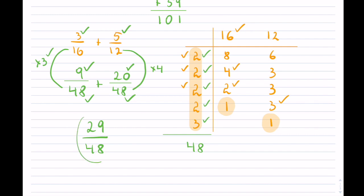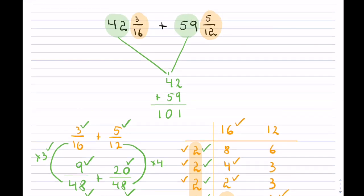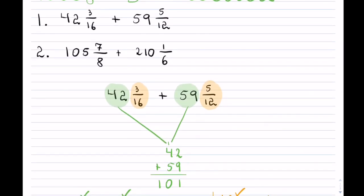Now, can I reduce this? And you can check for yourself that you cannot reduce this any further. So our answer overall to the first question is 101, that came from adding my whole numbers, and 29 all over 48. And that is by adding the two fractions. So this is, again, remember, in reduced form because we want a proper fraction here. And that completes that first example.